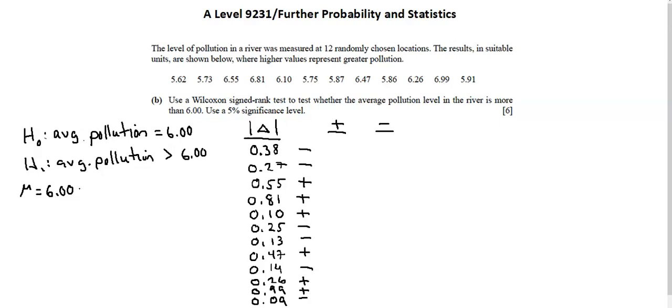And now I will rank from smallest to largest absolute value difference and identify by column whether the difference before adjusting for absolute value was positive or negative. So scanning down, I see that the smallest difference is 0.09. That is a negative notation. So across from 0.09 in the negative column, I'll write the number 1.